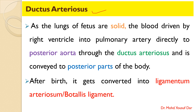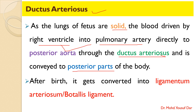The next term is the ductus arteriosus. In the fetus, the lungs are solid, and blood is pumped from the right ventricle into the pulmonary artery. From the pulmonary artery, blood goes through the ductus arteriosus into the posterior aorta, and from the posterior aorta this blood is carried to the posterior parts of the body. After birth, the ductus arteriosus is converted into a ligament known as ligamentum arteriosum, also called Botalli's ligament.